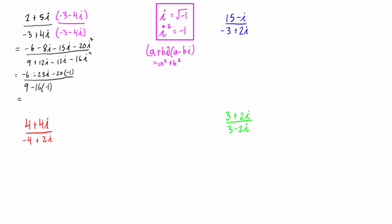We can combine terms: negative six plus twenty is positive fourteen, minus twenty-three i, and on the bottom we have nine plus sixteen, which is over twenty-five. We put this in complex number form: fourteen over twenty-five for the real part, and negative twenty-three over twenty-five times i for the imaginary part. This confirms we reduced the denominator to a squared plus b squared — a was negative three, so a squared is nine; b is four, so b squared is sixteen; nine plus sixteen equals twenty-five, which is exactly a squared plus b squared.